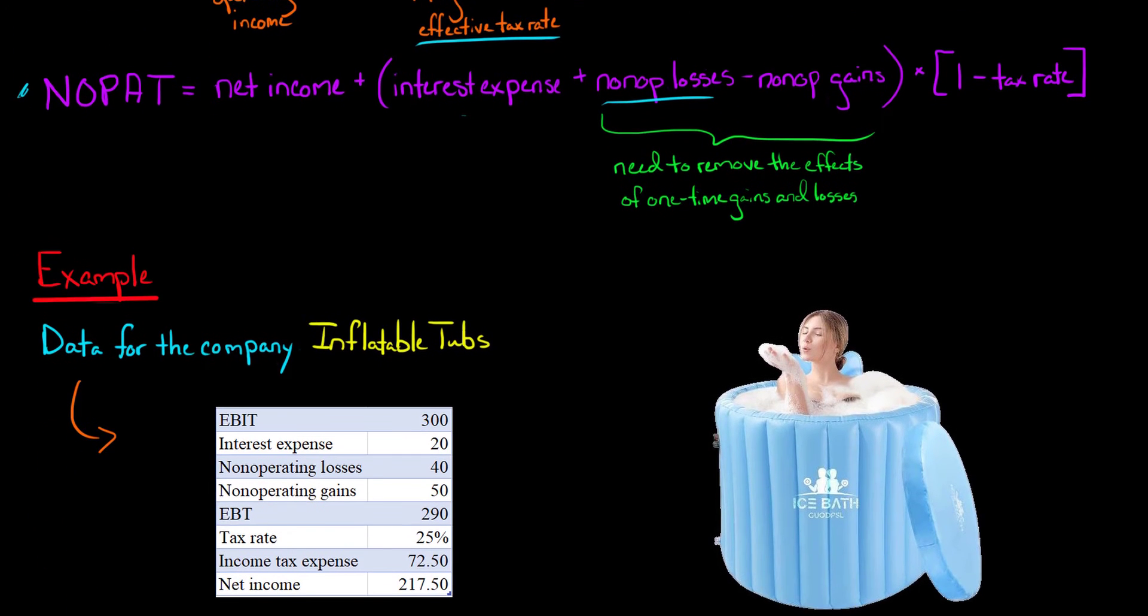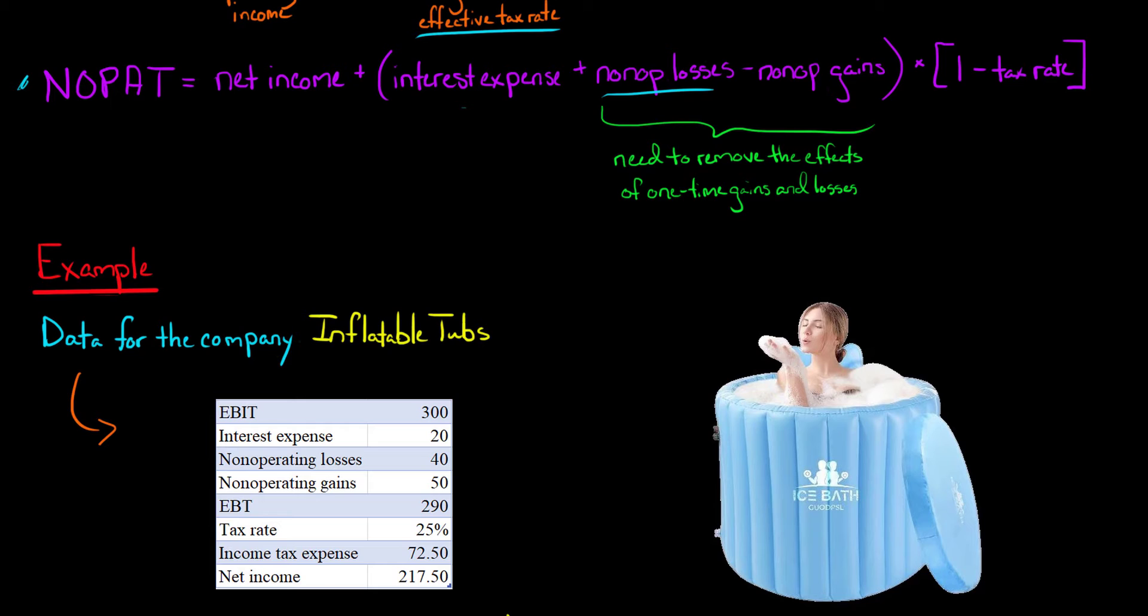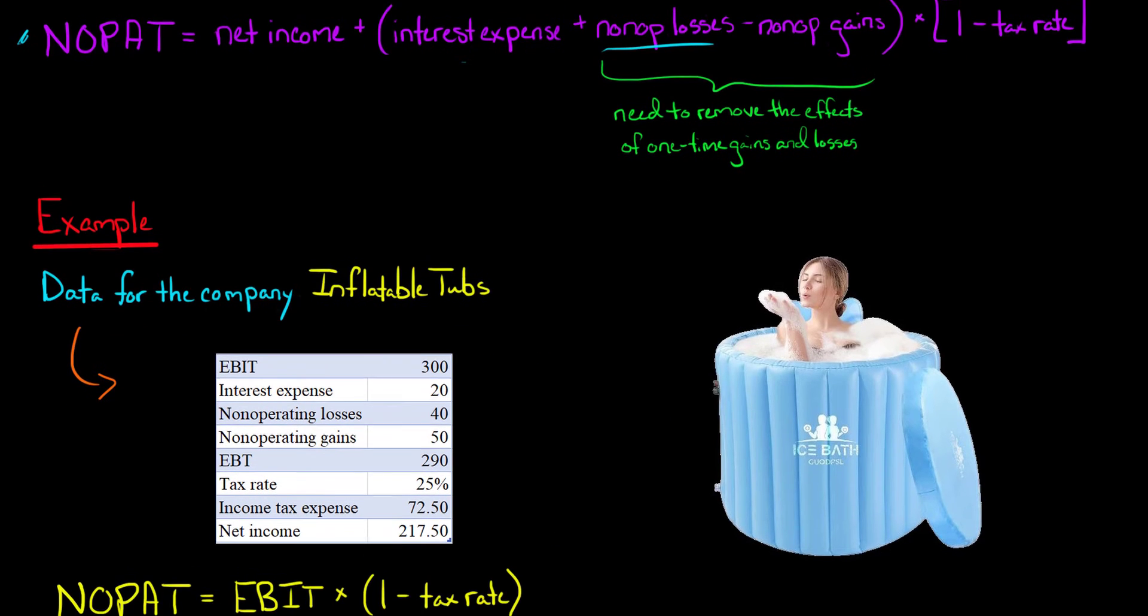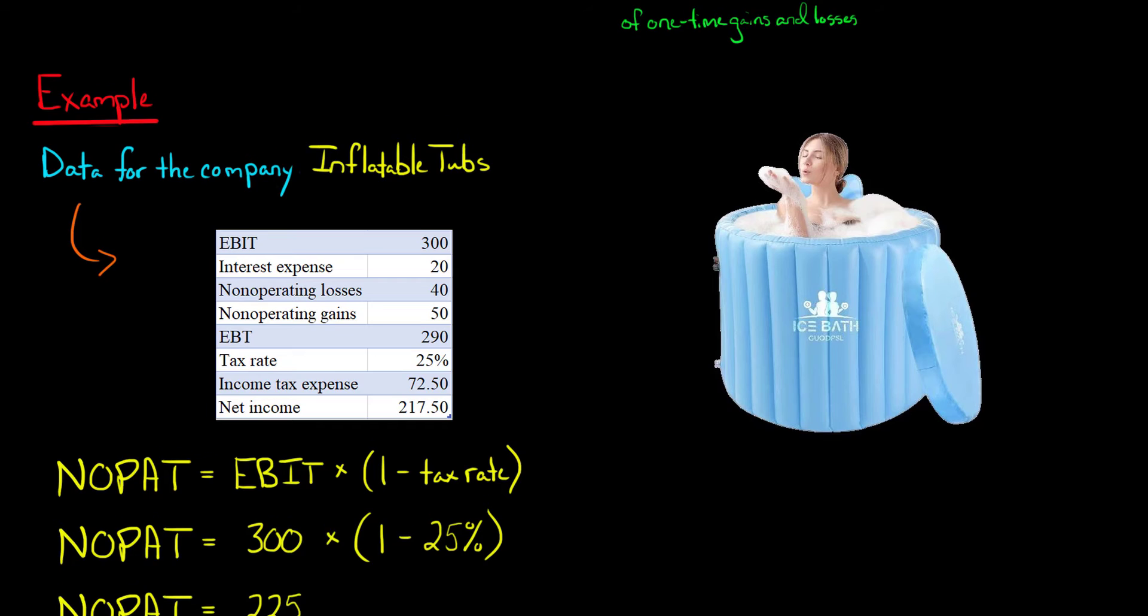Let's use some data for a company Inflatable Tubs. So they make inflatable hot tubs, or if you want to take an ice bath, you can buy it, put it in your basement, your living room, or maybe not your living room if you actually care about your furniture and don't want to have flood damage, but that's another issue. So we've got some data here, and I'm going to show you how to use both of those formulas to calculate the company's NOPAT.